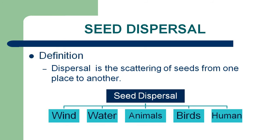Now let's come to seed dispersal. Dispersal is the scattering or spreading of seeds from one place to another place. Seed dispersal occurs with the help of five agents: wind, water, animals, birds, and humans.